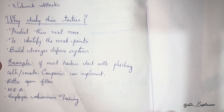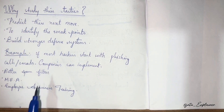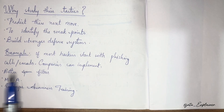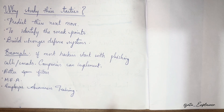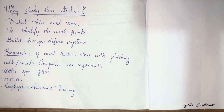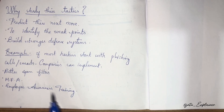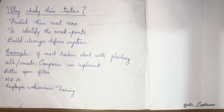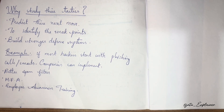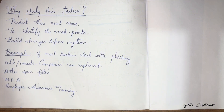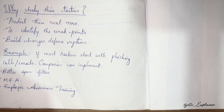For example, since most hackers start with phishing emails or calls, companies can implement better spam filters to filter out malicious emails. They can also enforce multi-factor authentication, and conduct employee awareness training to make employees proactive so that this type of attack does not happen in their organization.